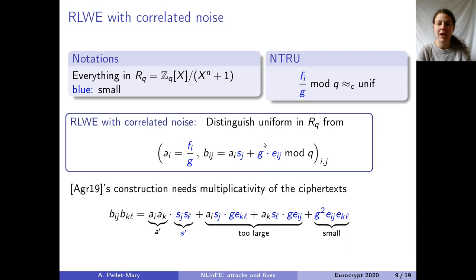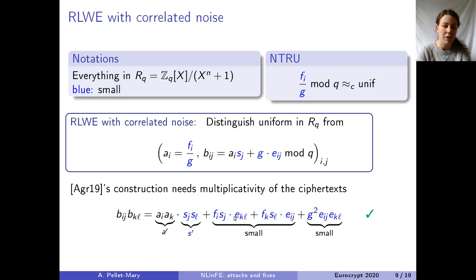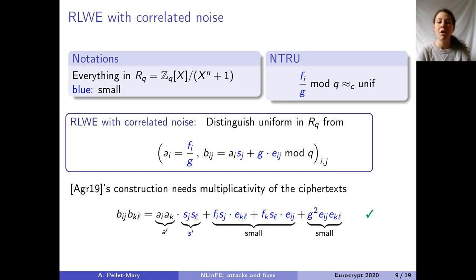Thanks to the error being a multiple of g, when we compute the product of two B elements and look at the cross terms that were too large, we see they are multiplied by g. Since the label is of the form something small divided by g, when we multiply by g we get something small. So the cross terms are now small — we have what we want for the scheme. The assumption we make is that this ring LWE with correlated noise distribution is indistinguishable from uniform in pairs of elements in RQ. If we can distinguish it, we can break the construction.